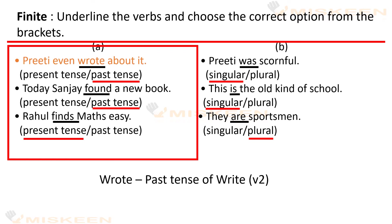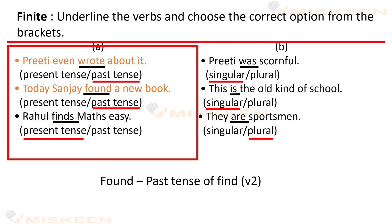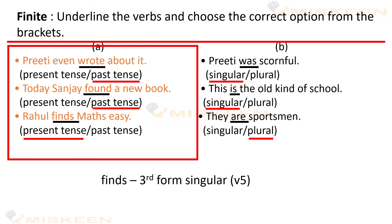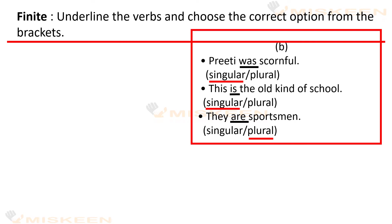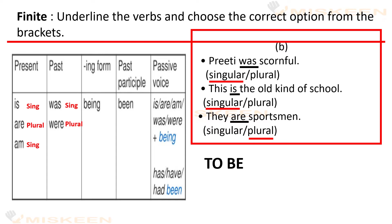Section A mein yeh batane ki koshish ki ja rahi hai ki kaise subject aur tense ki wajah se hamara verb change ho jaata hai. Preeti even wrote about it — base form is 'write', 'wrote' is past tense. Today Sanjay found a new book — base form 'find', changed to 'found' in past tense. Rahul finds maths easy — present tense but 'finds' because Rahul is third person singular. The 'to be' verb forms — is, are, am, was, were — change according to singular/plural and present/past tense.